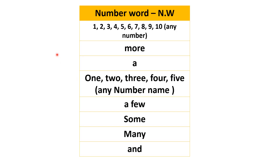Now let's see number words — in short we can write N.W. Any number, such as 1, 2, 3, up to 10 or beyond, will come in number words. Number names like one, two, three, four, five also come in number words. Additionally, words like more, a, a few, some, many, and 'and' are all number words.